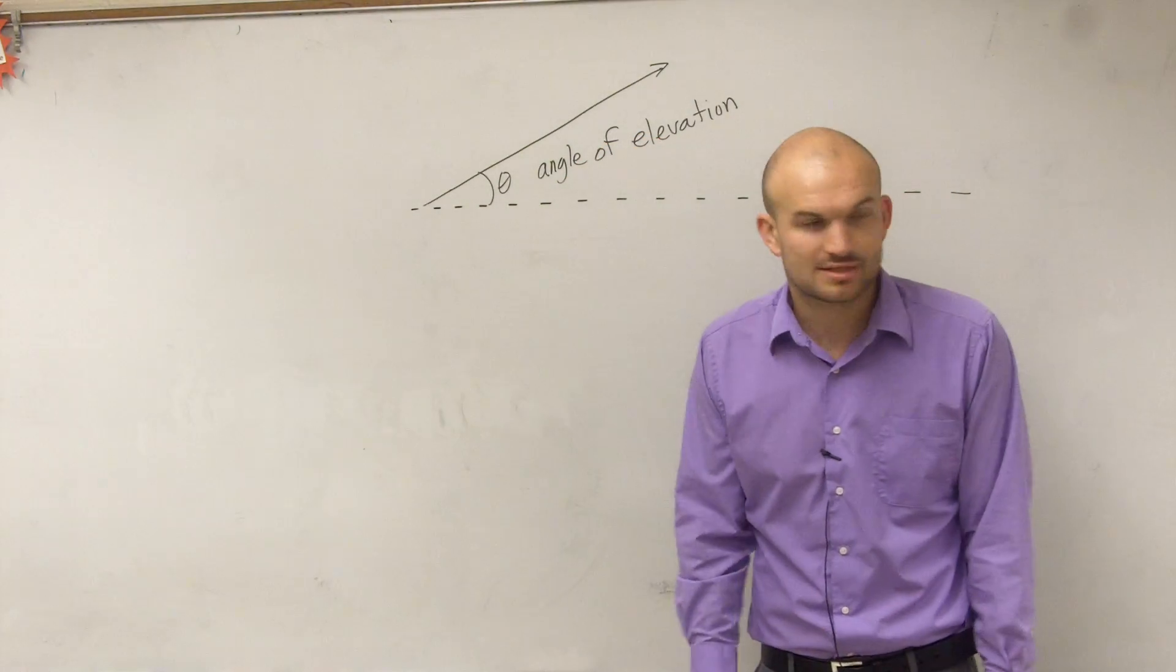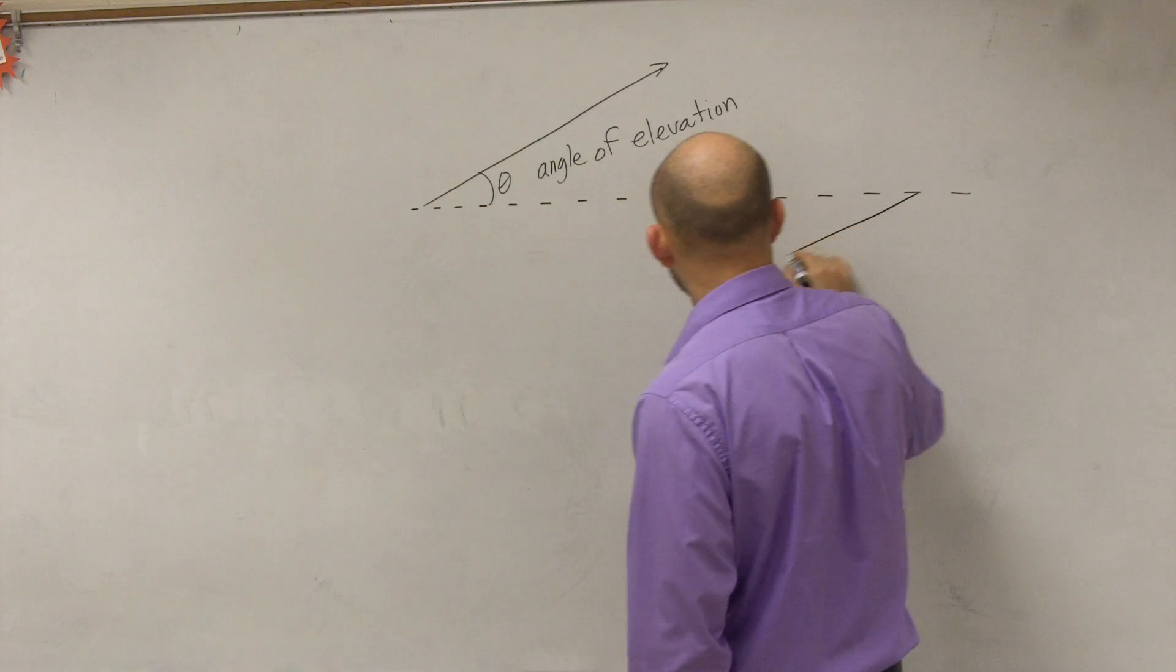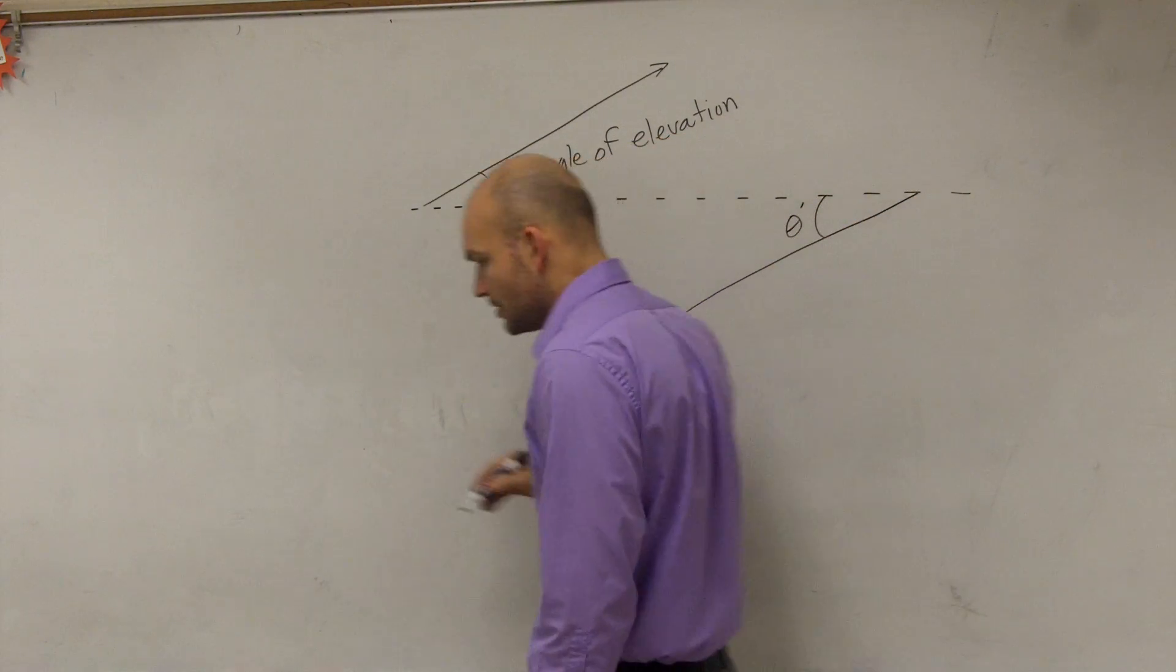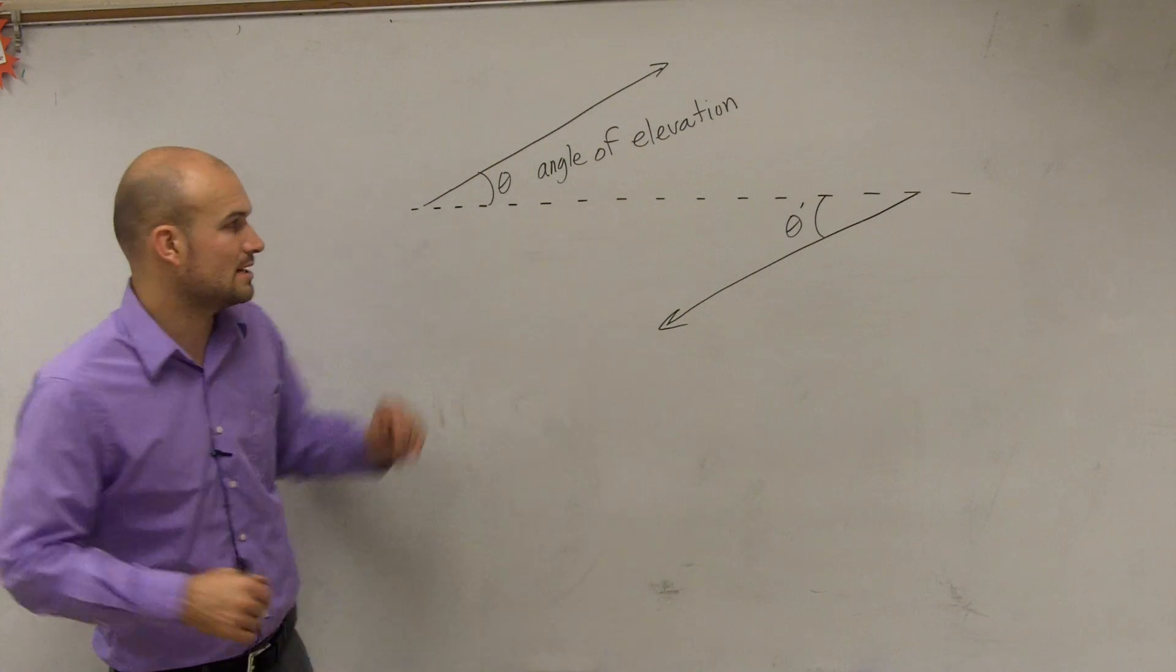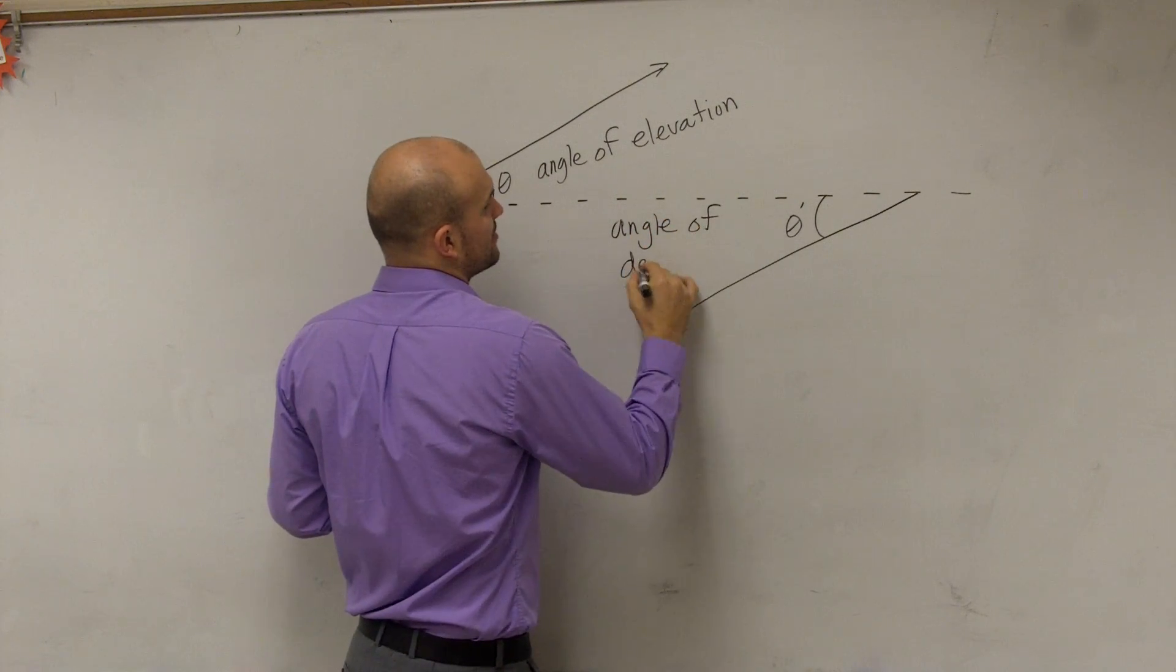Then what would it be if there's an angle that's going down from your horizontal line? Well, I'll just go in the other direction and represent it to save a little space. So if I had a different angle going down from my horizontal line, this is what we call an angle of depression.